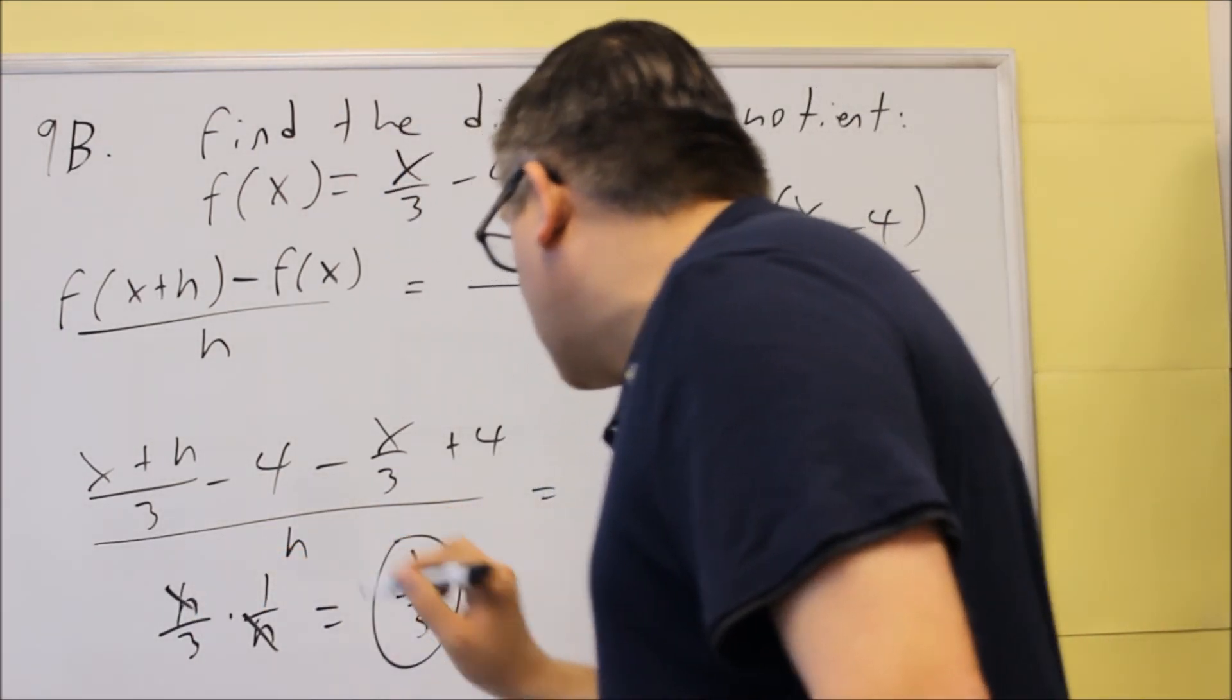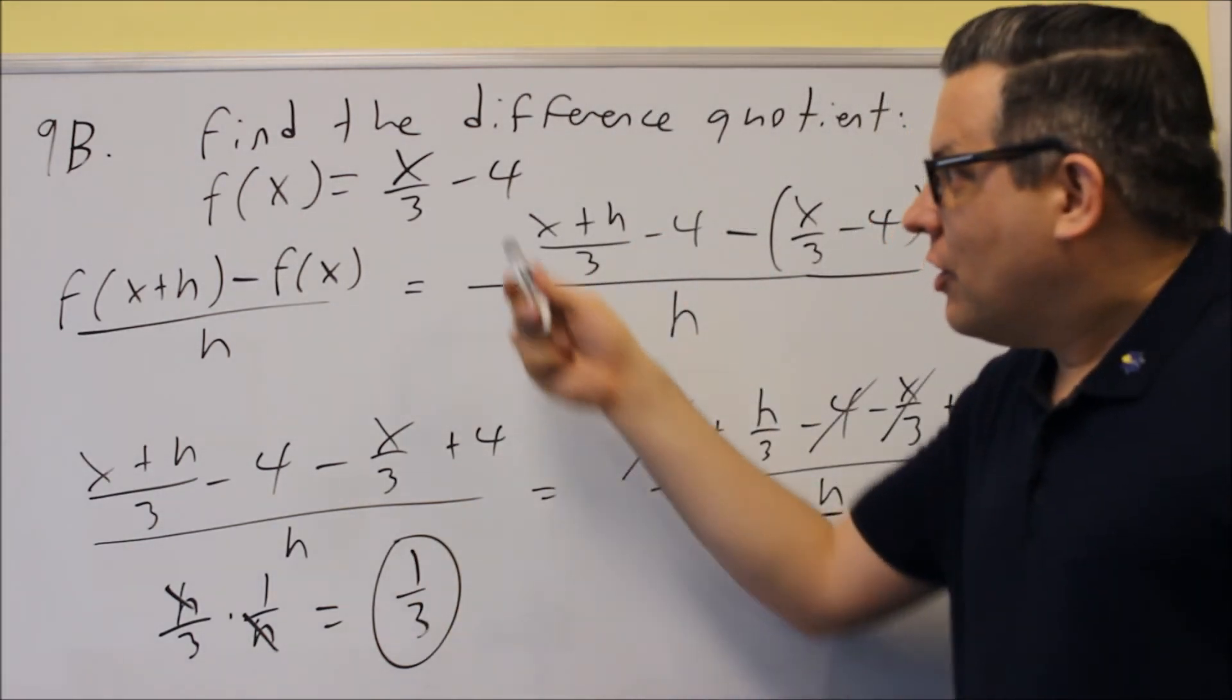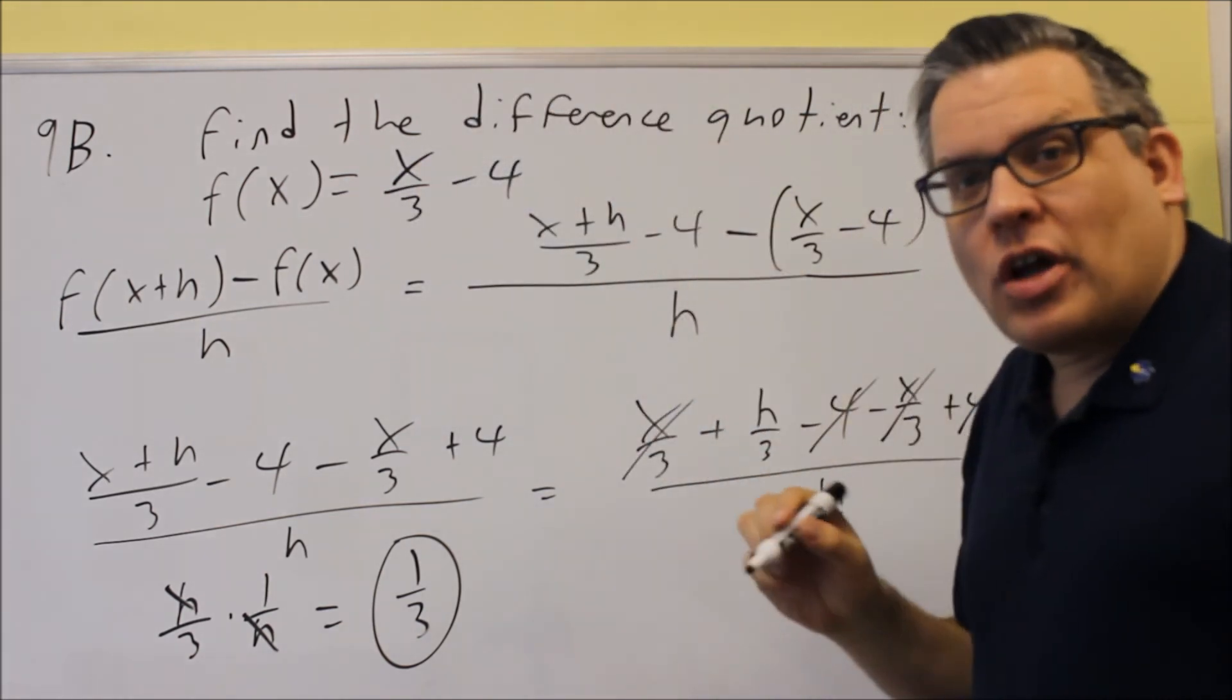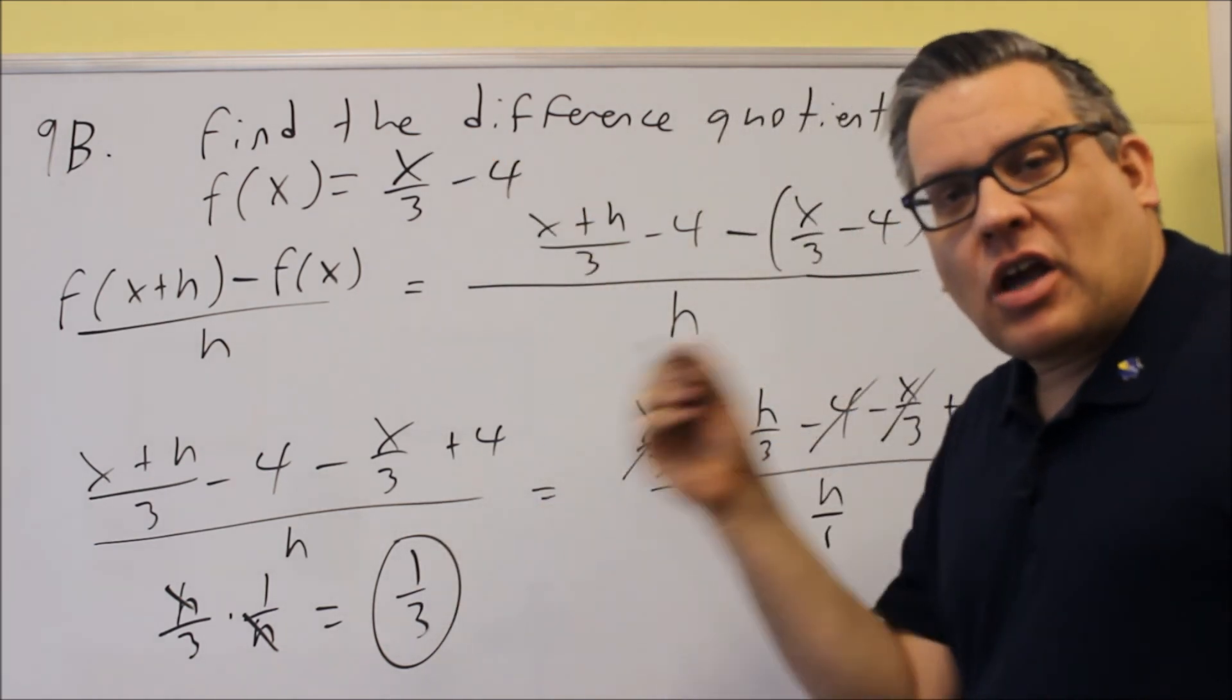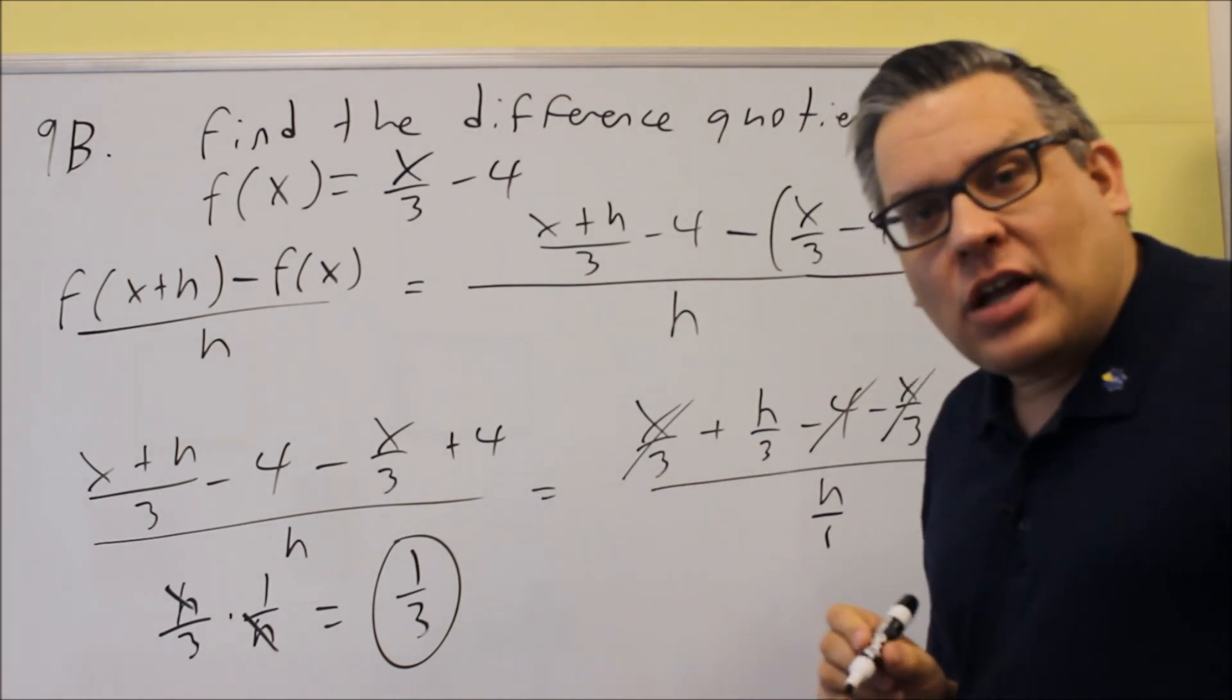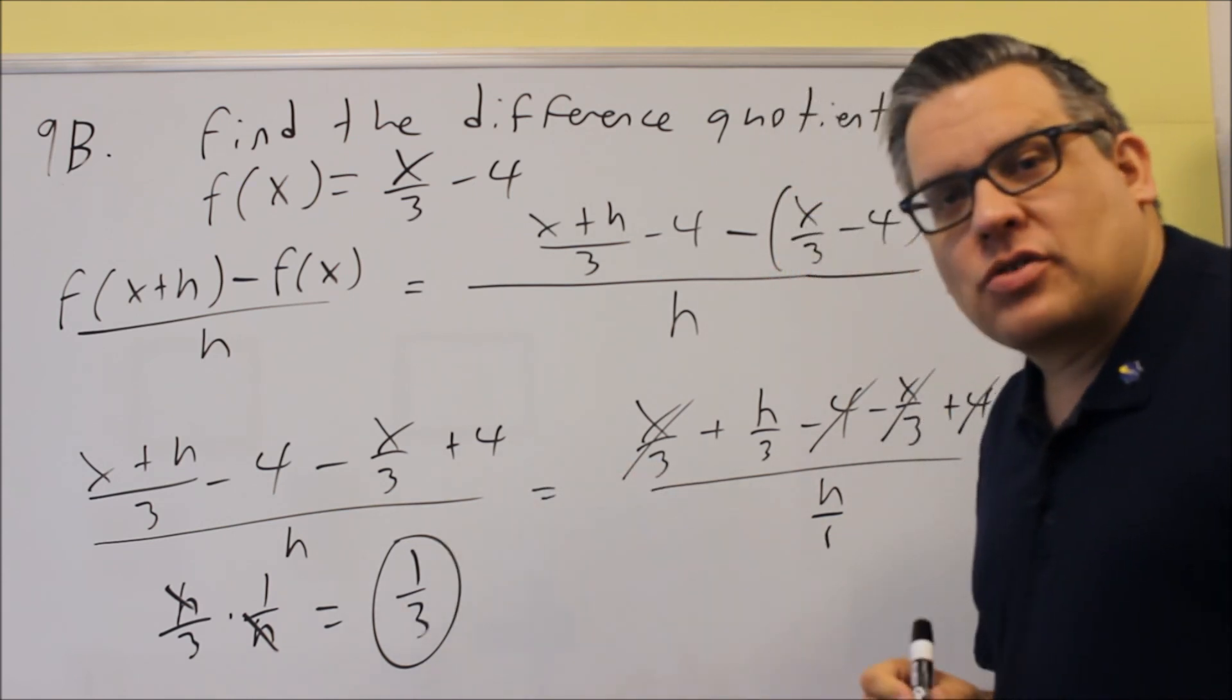And then my final answer, this time I just get a number for my answer. So, in fact, any time you have something that is in a linear form, so in other words, if you have x raised to the first power, then you're going to get just a numerical answer for that. But, if you have like an x squared or x cubed, something like that, then you're going to end up with an h as part of your answer. But, for this one, for 9B, 1 third will be your answer.